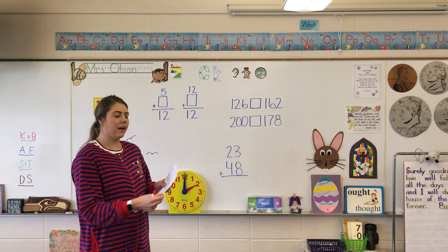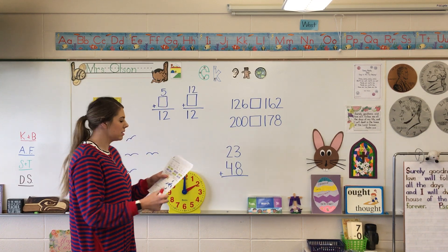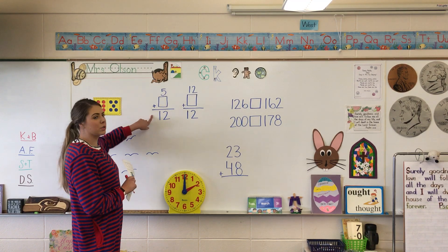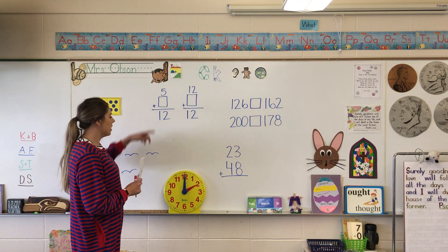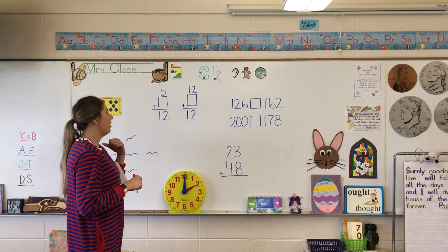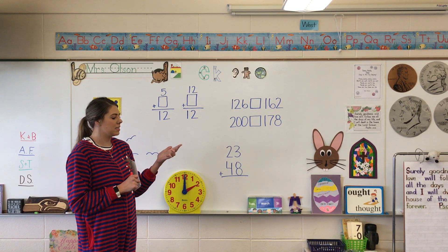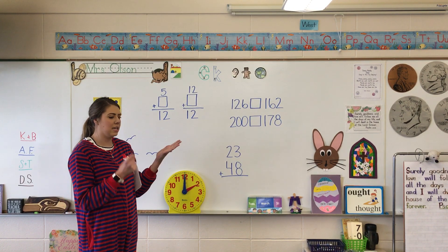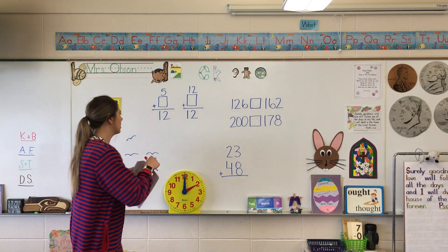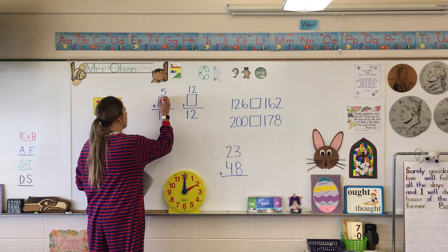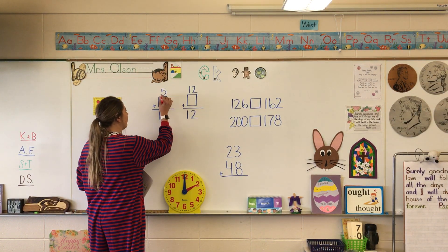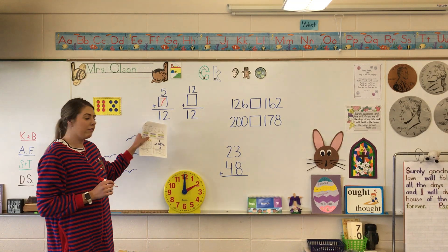It's just asking us to write the missing numbers. So right here we have 5 plus what equals 12. Remember the way that we do this is we count up: 5, 6, 7, 8, 9, 10, 11, 12. We have 7 fingers, so we'll put 7 in the box. So 5 plus 7 equals 12.